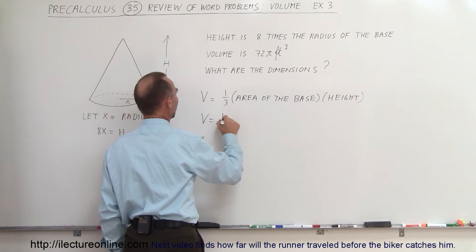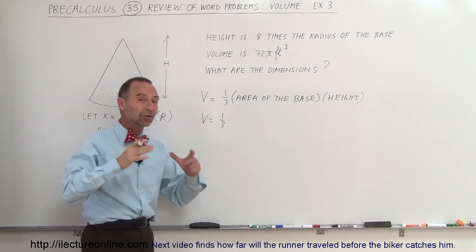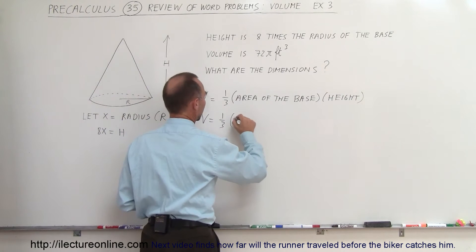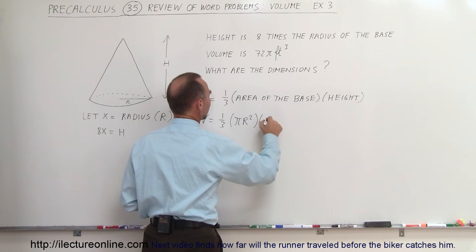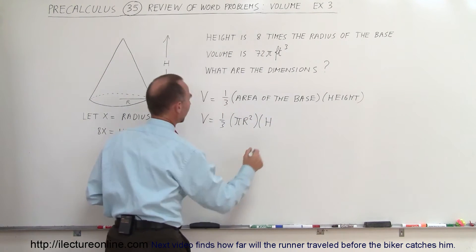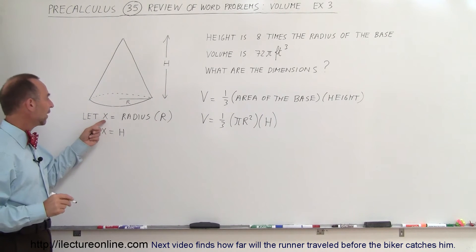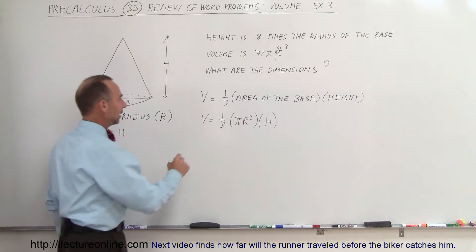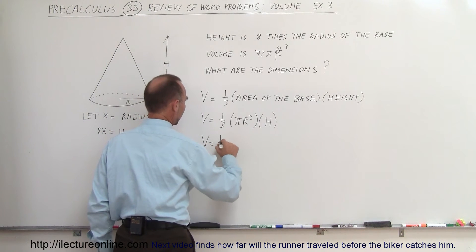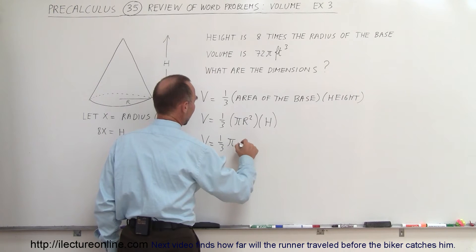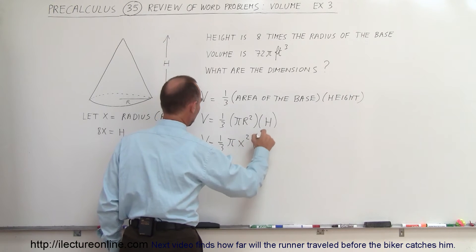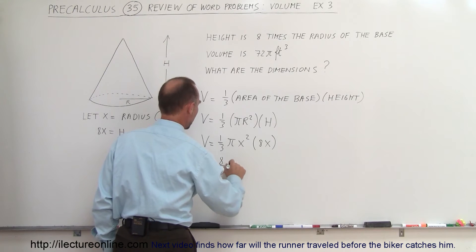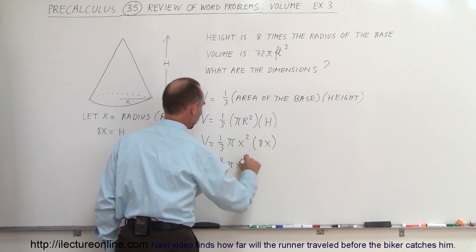This becomes: volume equals one-third, and since the base is a circle, that would be pi R squared times the height H. Now we can replace R and H in terms of X — since R equals X and H equals 8X — we can write the volume equals one-third pi times X squared times 8X, so the volume equals eight-thirds pi X cubed.